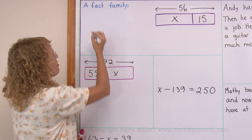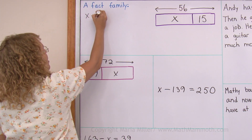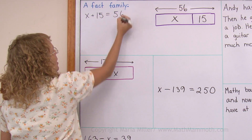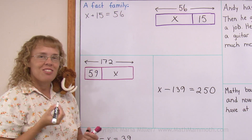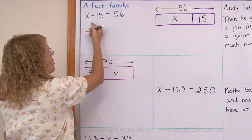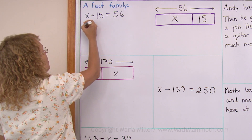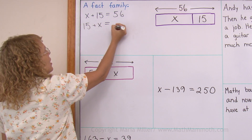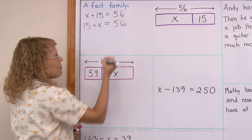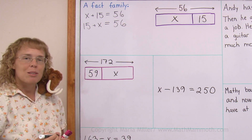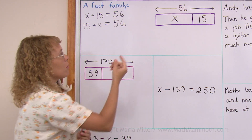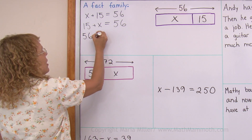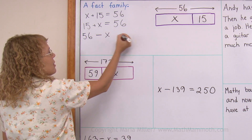The addition I can write is x plus 15 equals 56. The other addition in a fact family is where you switch these numbers: 15 plus x. That still equals the total. And the subtraction starts with the total — 56, the total length.